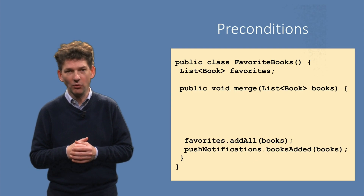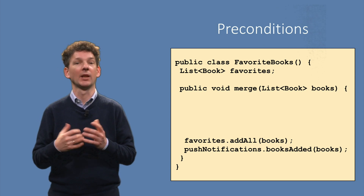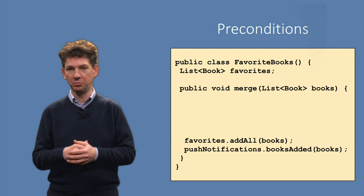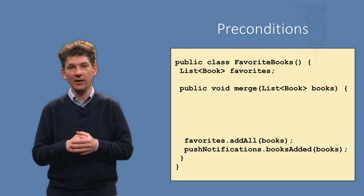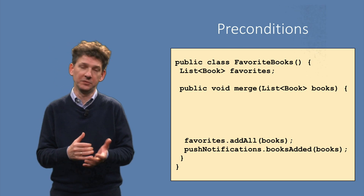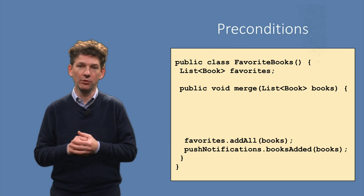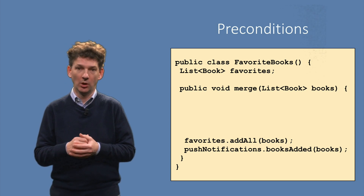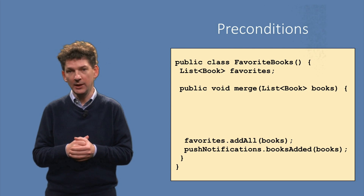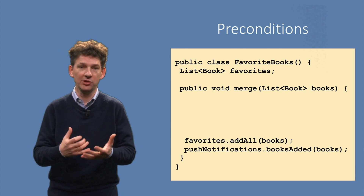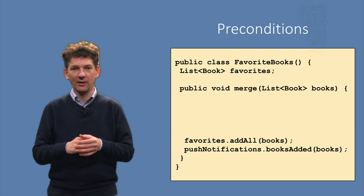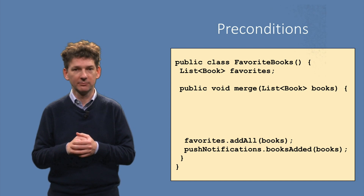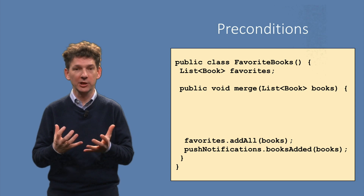If you write a method, what pre-conditions should you give it? Let's look at an example. Here we see a class for keeping track of your favorite books. You can see one method called merge. Its intent is to add new books to your list of favorite books. It does so by using Java's standard list class and its add-all method. Moreover, it notifies any listeners about books being added, so that, for example, push notifications can be sent to some phone. Does this method rely on any assumptions? Under what circumstances might this method fail? Can we turn these circumstances into explicit pre-conditions?